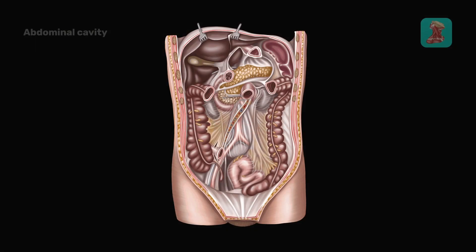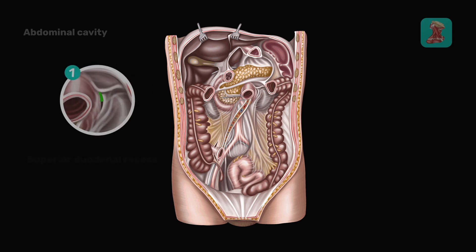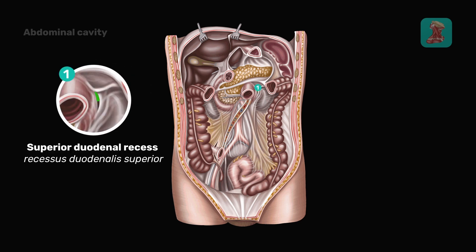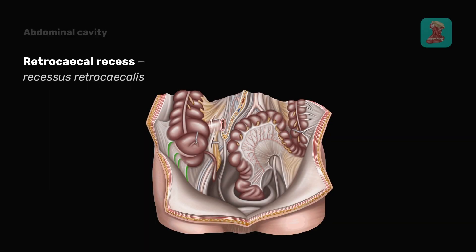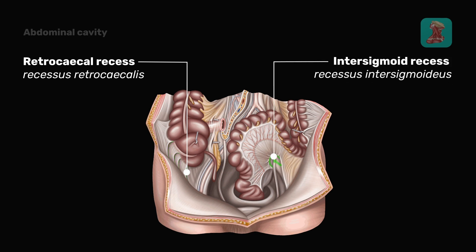There are also fossae, or recesses, on the posterior wall of the peritoneal cavity. Retroperitoneal hernias may form in them. The superior duodenal recess and the inferior duodenal recess are located near the duodenojejunal flexure. Behind the cecum, there is the retrocecal recess. The intersigmoid recess is located near the sigmoid colon.